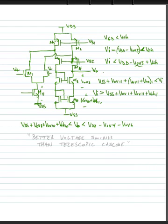So our output swing is better than our telescopic cascode circuit, which is good. And our input swing is better than that telescopic cascaded circuit. So by folding the transistor, we get better common mode input range and better output range, but we get it at the expense of needing more current.